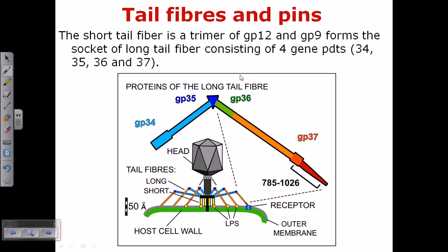The short tail fiber is a trimer of gp12 and gp9, which forms a socket-like structure. The long tail fiber extending from the base plate is made up of four different regions: gp34, gp35, gp36, and gp37. A triangular protein at the junction of the gp34-35 and gp36-37 complex helps the fiber bend. At the tip, gp37 is attached and the structure becomes thinner, allowing it to penetrate the host cell easily.